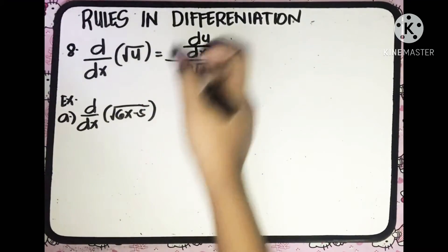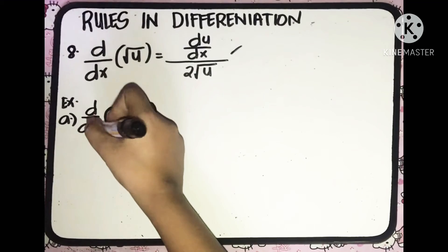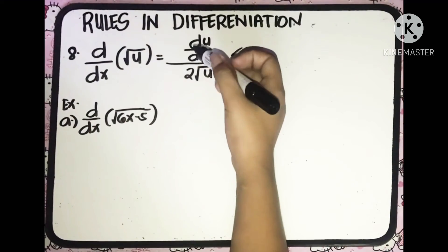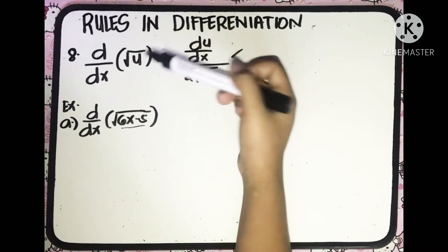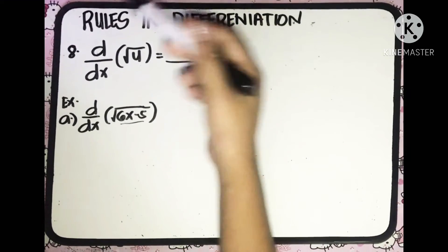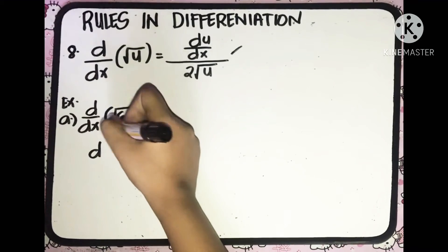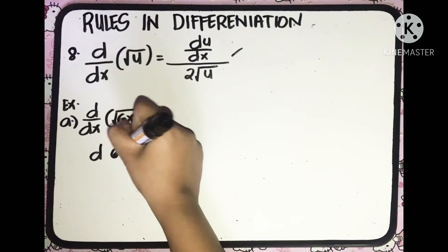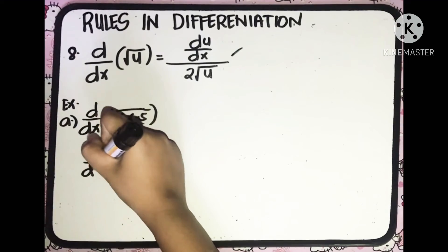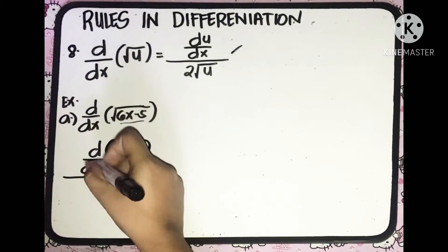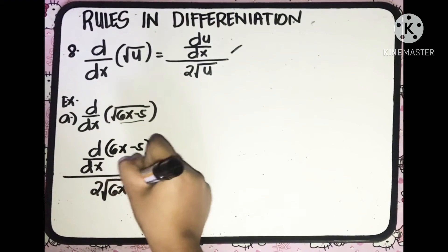Applying the rule, what is the value of u here? The value of u is 6x minus 5. Following the rule, we'll have the derivative of (6x minus 5) with respect to x, all over 2 square root of (6x minus 5).